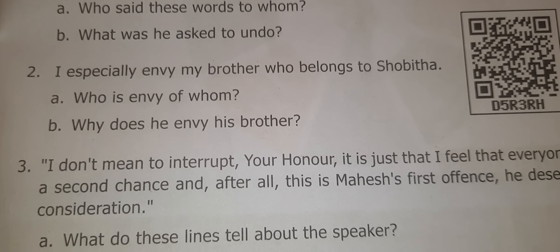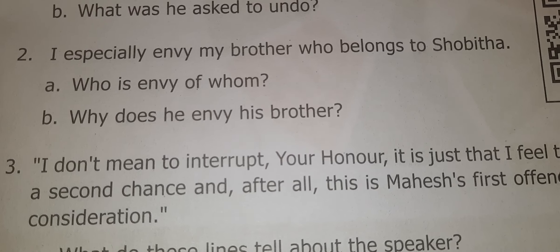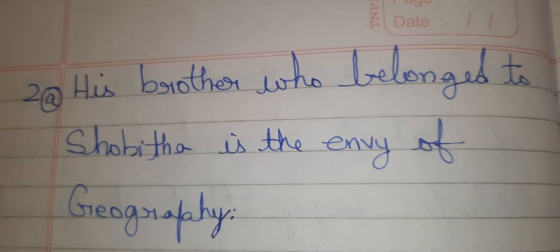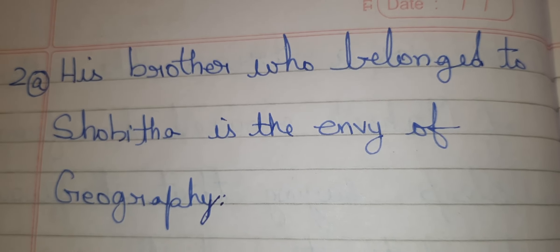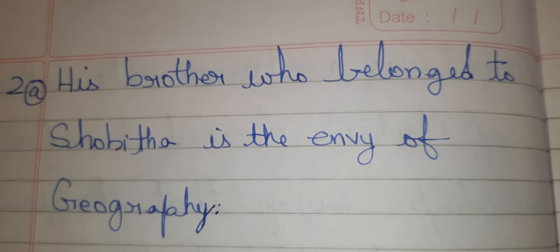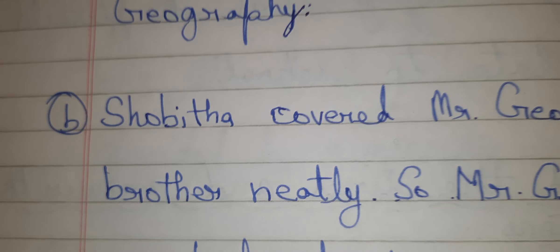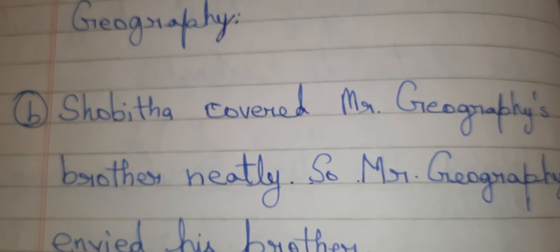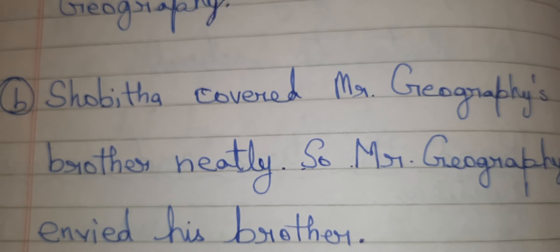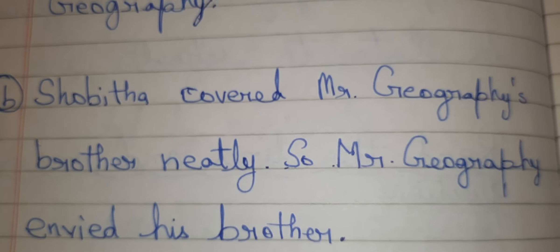Second one: 'I especially envy my brother who belonged to Sobita.' A. Who is envious of whom? Geography is envious of his brother who belonged to Sobita. B. Why does he envy his brother? Sobita covered Mr. Geography's brother neatly, so Mr. Geography envied his brother.